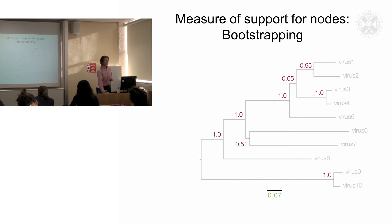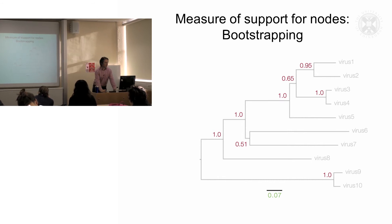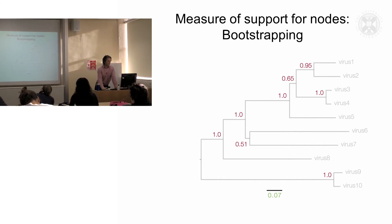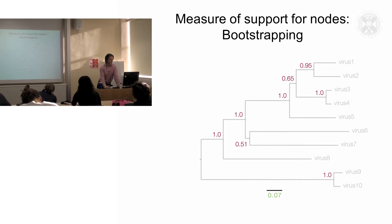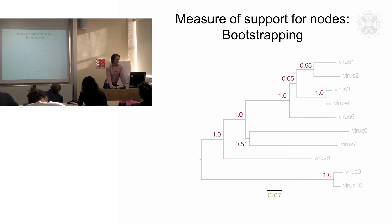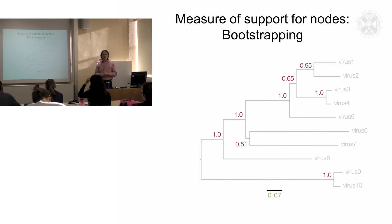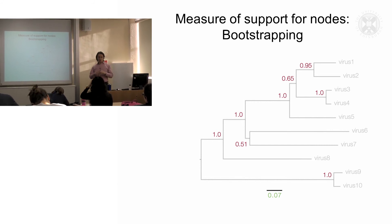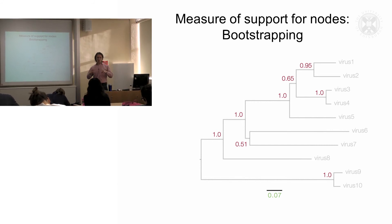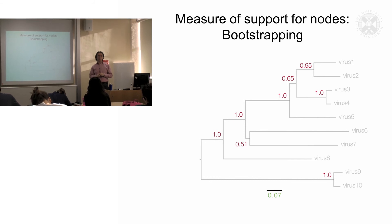This is more likely to happen by chance than it is by the actual real topology of the tree and the real relationship of the virus sequences. So essentially if you see a bootstrap value of one that's a very high level of statistical support for the positioning of that node and the branch pattern in the tree.